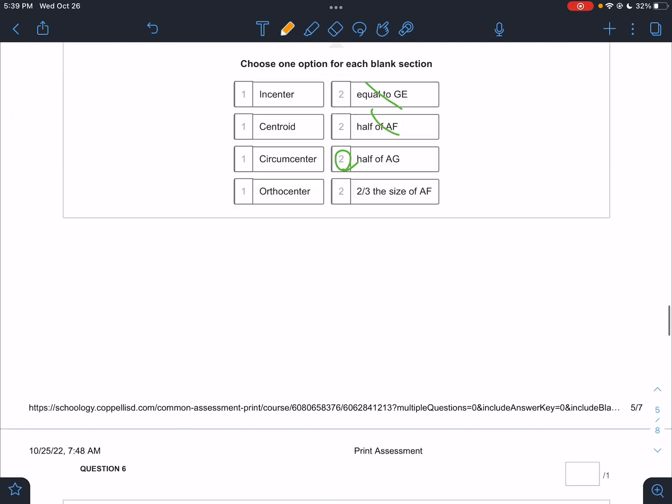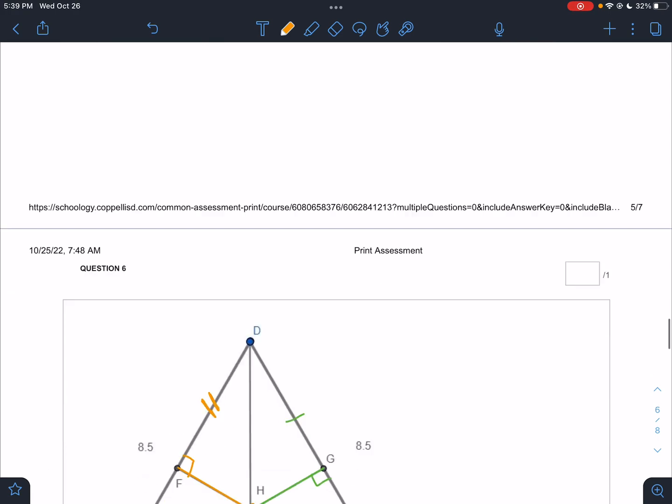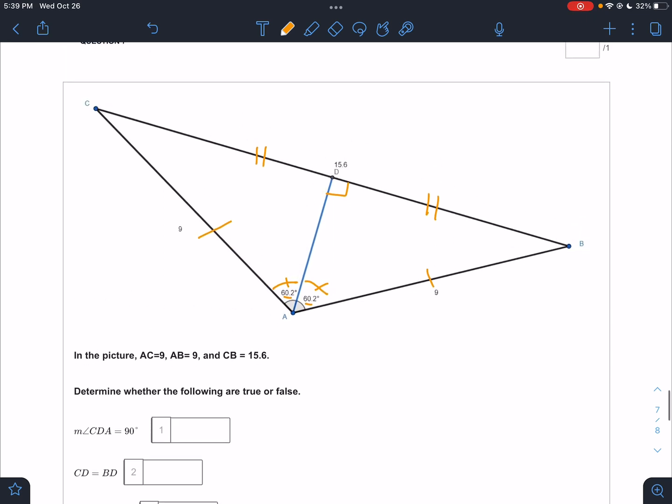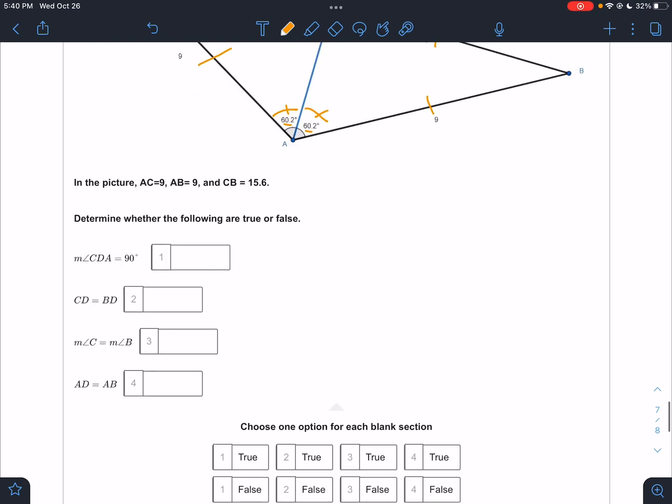So all three of these were the properties that involved, actually not that one, sorry. This one and this one involved equilateral and isosceles triangles. Those have very special situations. That one line is an altitude, a median, an angle. It's everything. So if you know it's isosceles and it's one thing, then you know it's all four things.